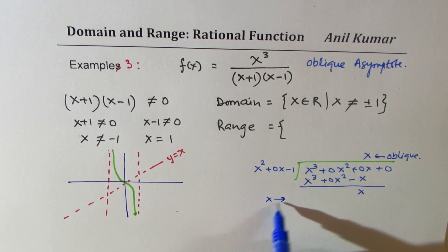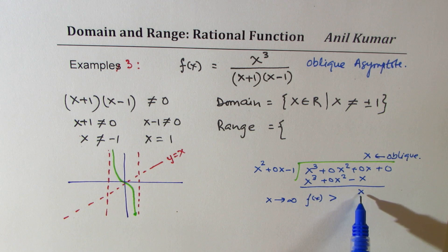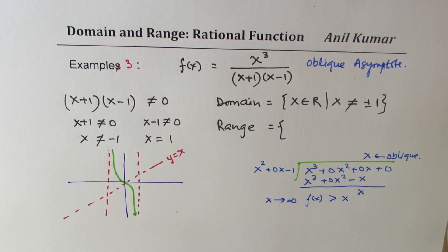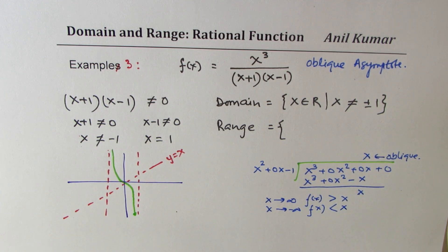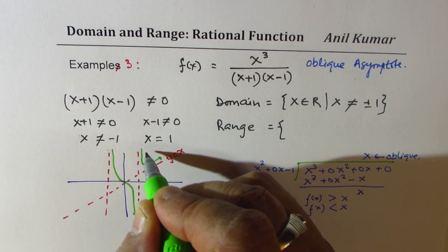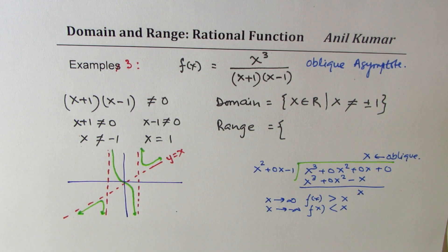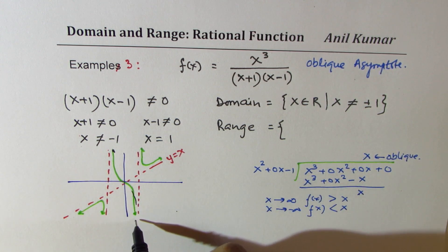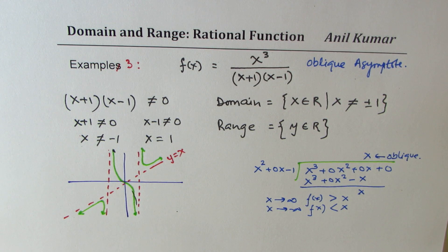The remainder x means the function is approaching the oblique asymptote but never quite there. When x approaches positive infinity, f(x) is slightly above y = x; when x approaches negative infinity, f(x) is slightly below y = x. The graph clearly indicates that y values could be anything, so there are no restrictions on the range. For rational functions, we could have restrictions on domain, on range, or on both.